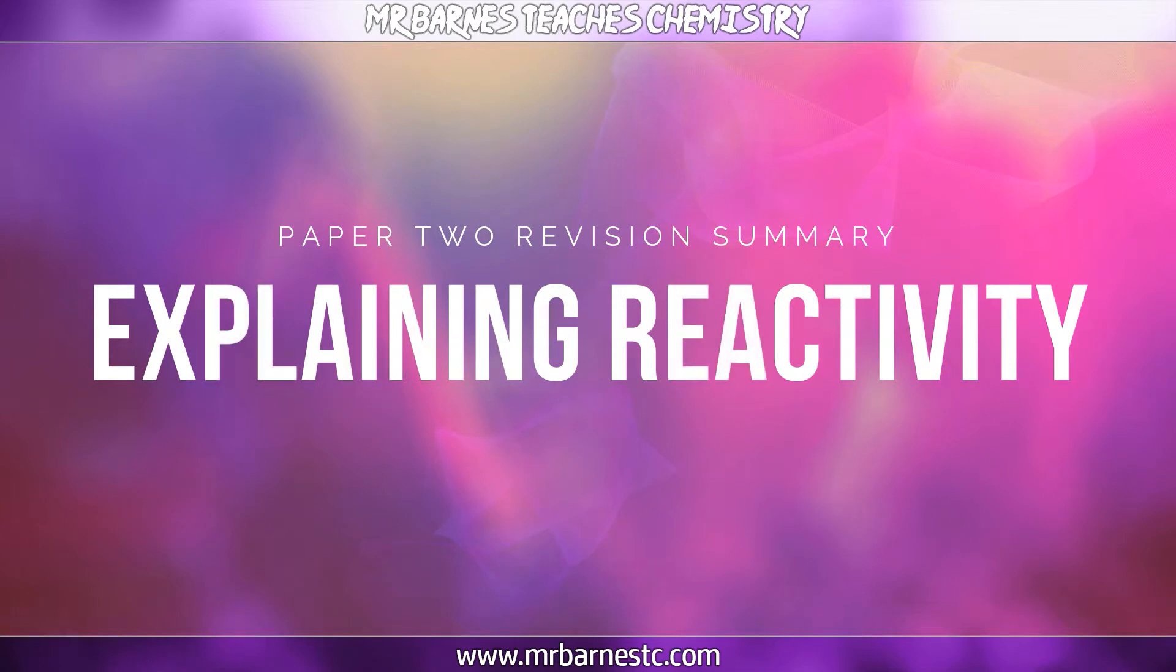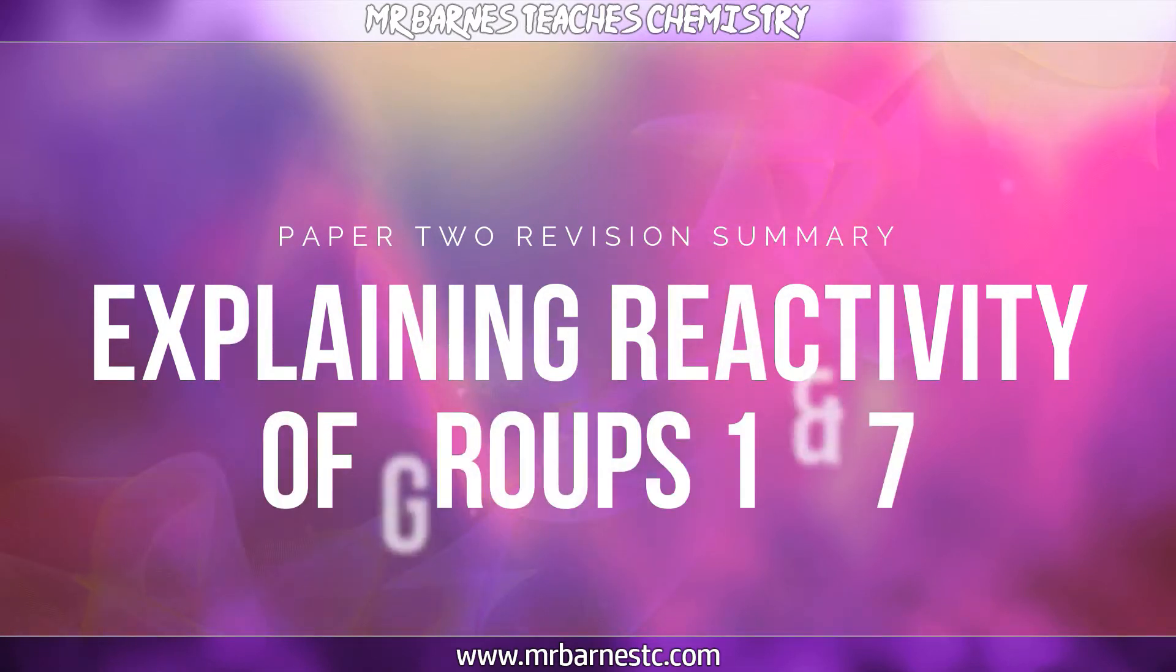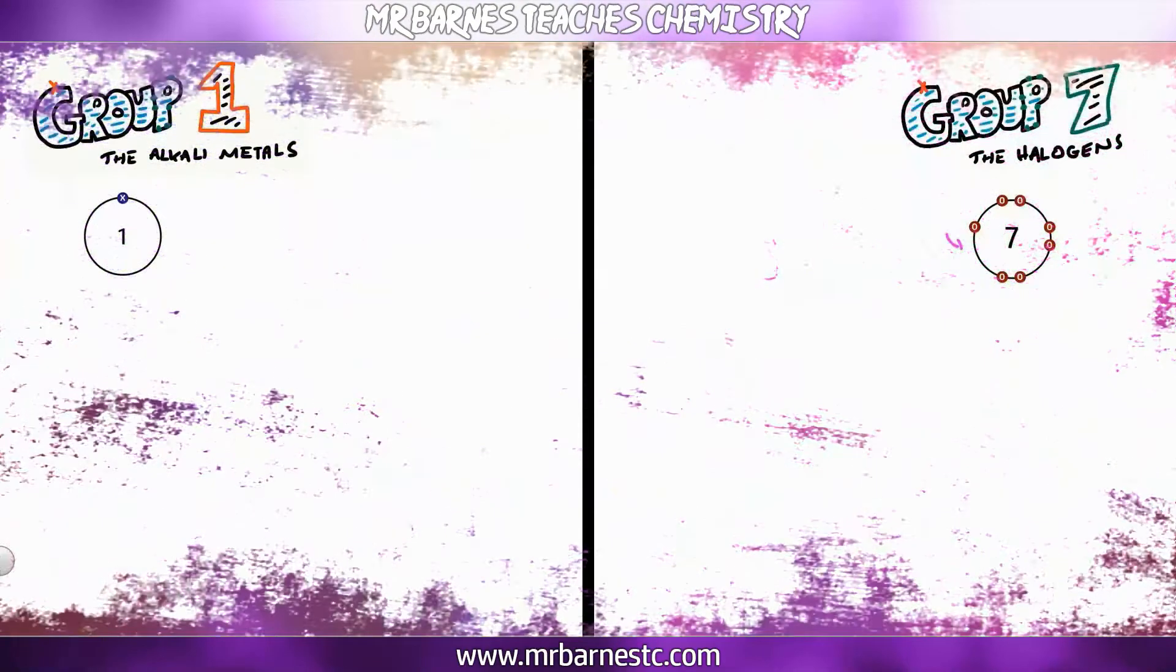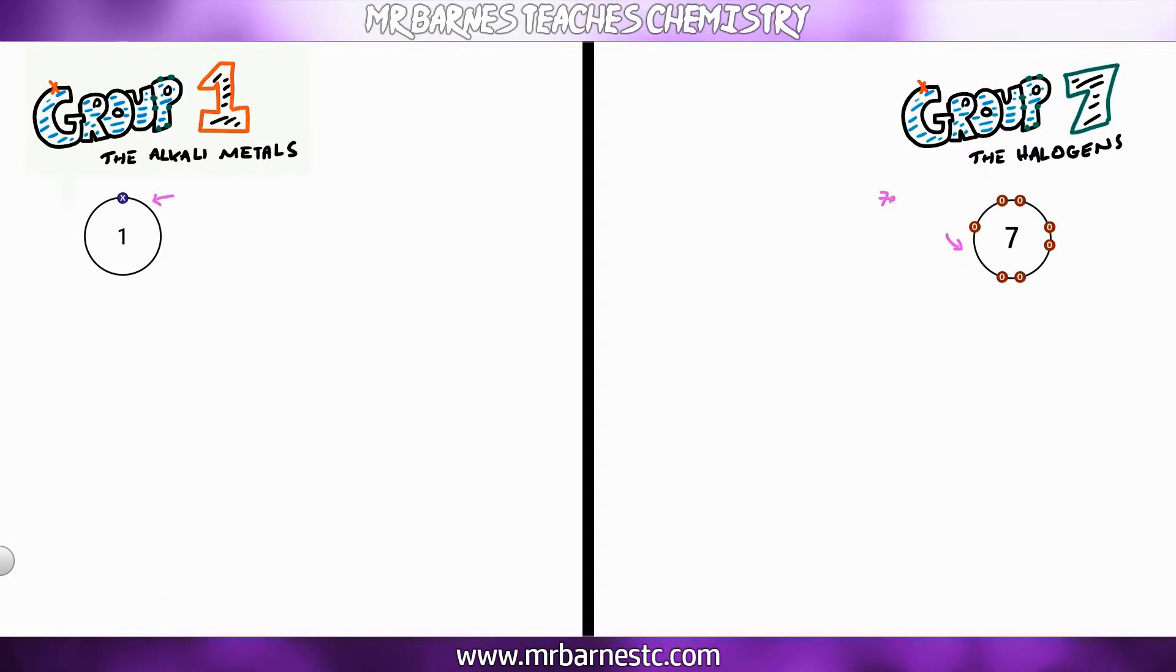The next part of this video is going to have a look at why reactivity increases as you go down group one. Now because they're similar, I'm going to put group seven in here so you can see why reactivity decreases as you go down group seven. We're going to start off looking at the outer shells. If you remember, group one has one electron in the outer shell and group seven has seven electrons in the outer shell, which means that group one metals want to lose electrons and group seven want to gain them. That's massively important.